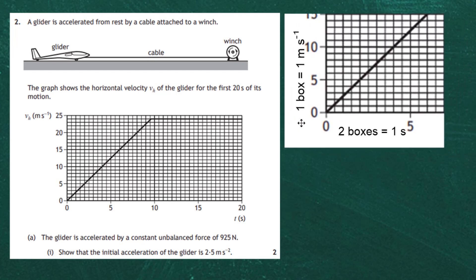I've blown up the graph to show the scale. On the time axis, two boxes represent one second — you can check that: one, two, three, four, five — five seconds. On the velocity axis, one box equals one meter per second — one, two, three, four, five. Now we know the scale and can do our calculations.